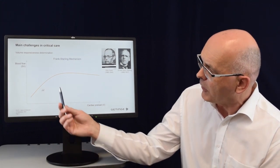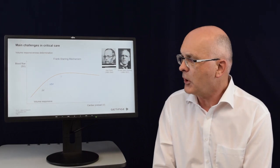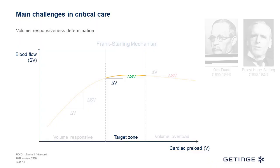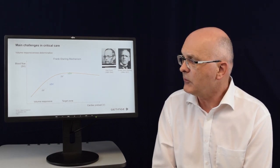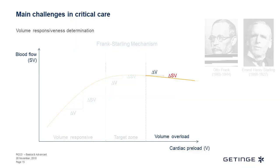When we are on the left part of the curve, adding fluid to the patient produces a significant increase in blood flow, and we know the patient is volume responsive. The target is to manage the patient into this situation. When we give the same amount of fluid and there is no longer a significant increase in stroke volume, and if we continue giving fluid, we may see that fluid administration has an adverse reaction — a decrease in stroke volume — and we clearly know the patient is in a volume overload situation.